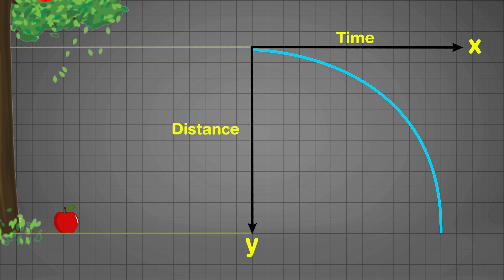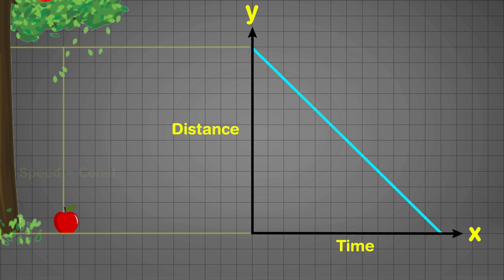If the speed variation reduces, the curve will become flatter and flatter till it becomes a perfectly straight line. This will happen only when the apple is falling with a constant speed. For the time being, let's assume the apple falls with a constant speed and the variation of distance with time is a straight line. This straight line along with x-axis and y-axis make it a right triangle.